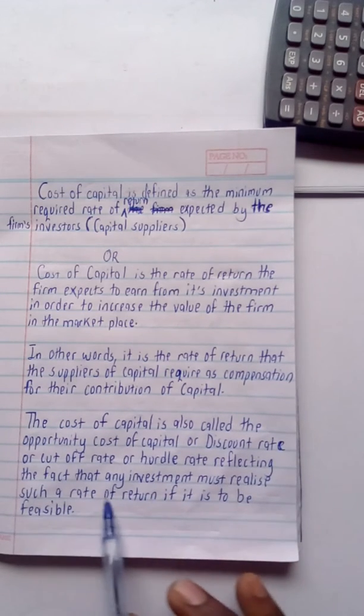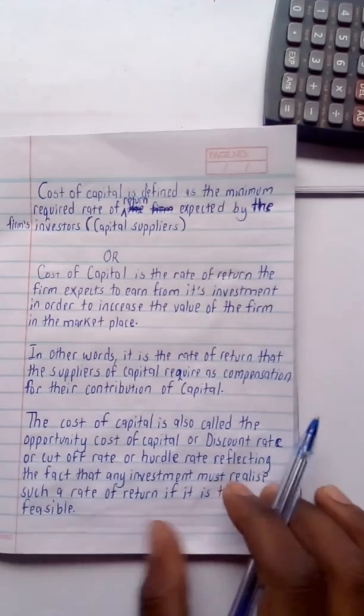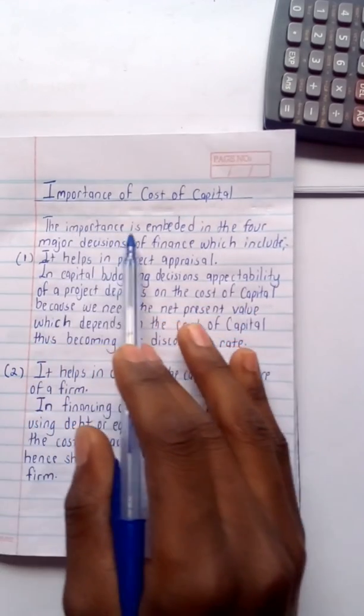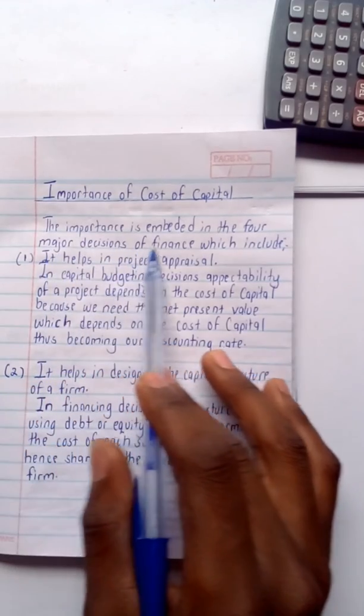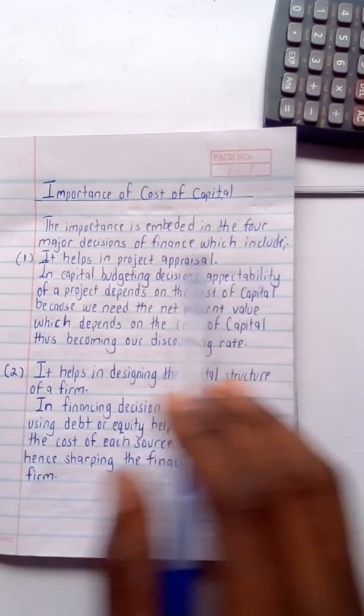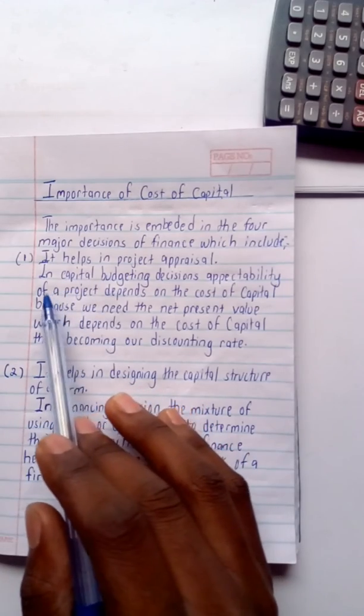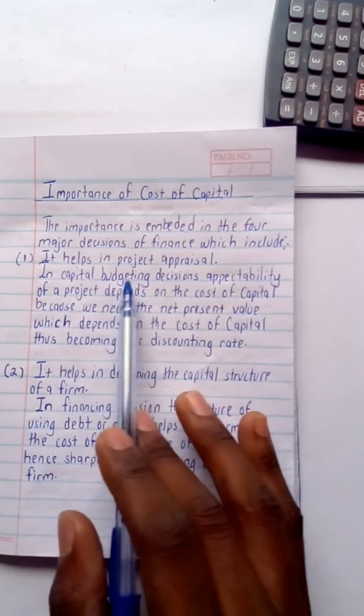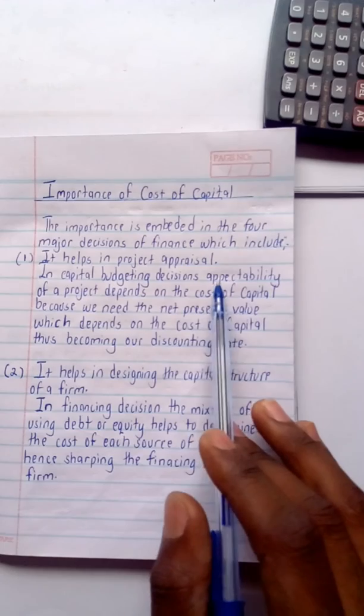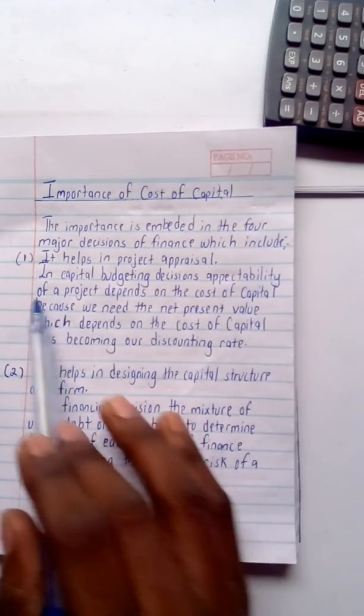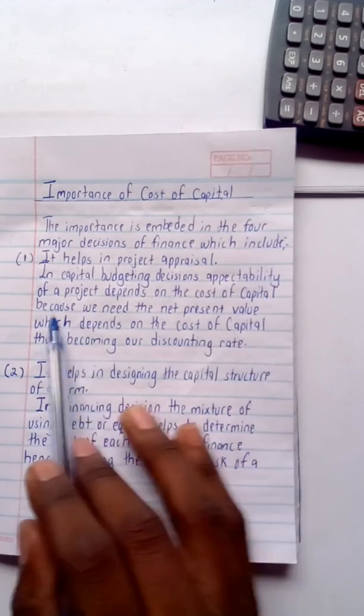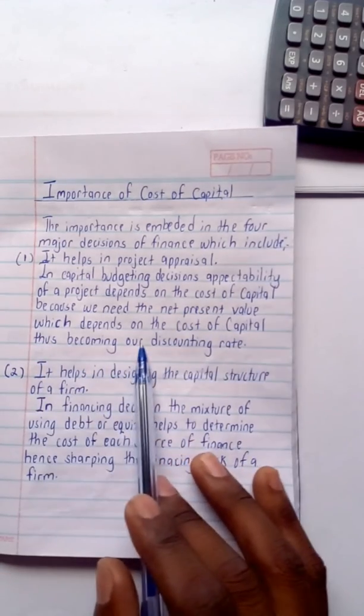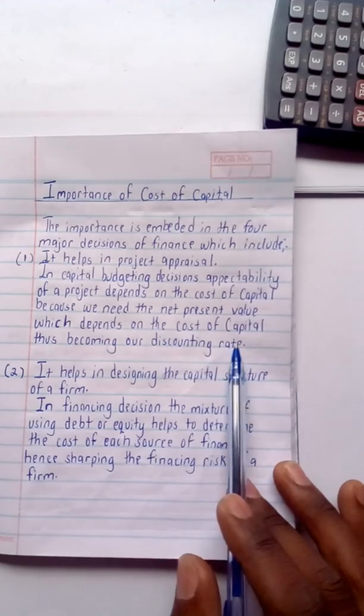Looking at the importance of cost of capital, the importance is embedded in the four major decisions of finance. Looking at the capital budgeting decision, it helps in the project appraisal. In the capital budgeting decision, acceptability of a project depends on the cost of capital because we need the net present value, which depends on the cost of capital, thus becoming our discounting rate.